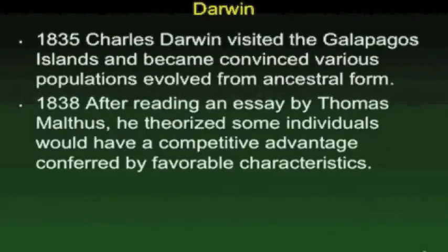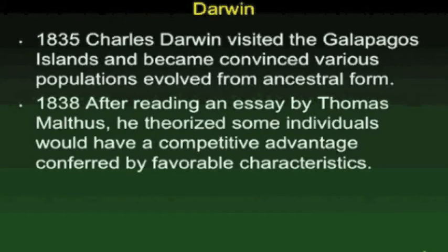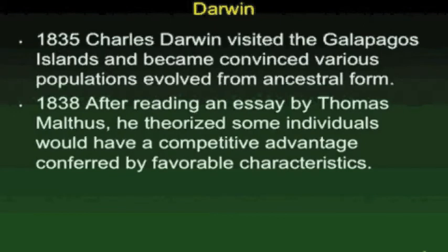We start out by talking about Darwin. Here's a young man who sailed across the Atlantic to explore South America. He was the naturalist on the ship called the Beagle, and as he was looking at the different animals in South America, he noticed quite a variation amongst the same species of animals. This really came to a head when he visited the Galapagos Islands, which was about a thousand miles off the coast of Peru.